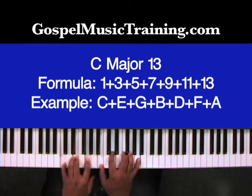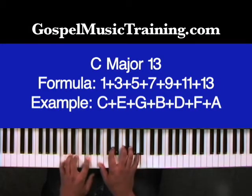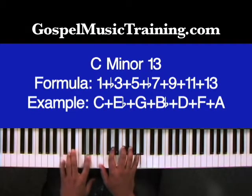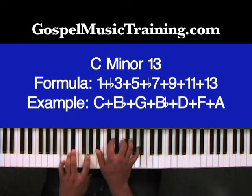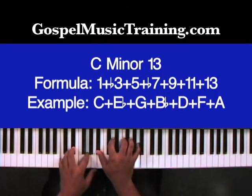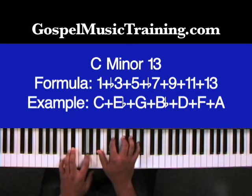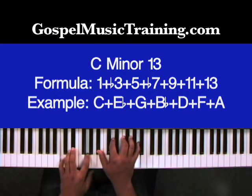Let's look at a minor 13th chord. All we have to do is lower the 3rd, which is E — flat that E. So that gives us the C minor. And then we lower the 7th, which is B. This gives us a minor 13 chord. Another chord that you will not find yourself using really too much because it just has too much tension and it really doesn't sound good in a lot of different songs.